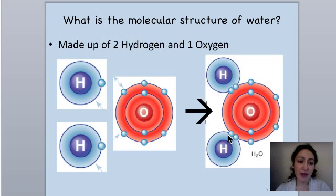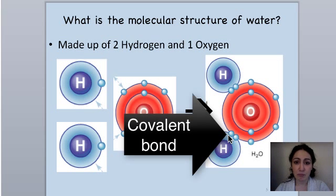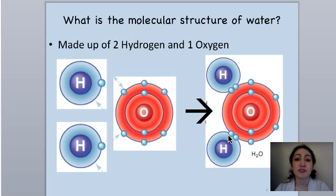So this kind of bond that forms between hydrogen and oxygen is what's called a covalent bond. A covalent bond means that there's sharing of electrons. So when elements share electrons, that's called a covalent bond.